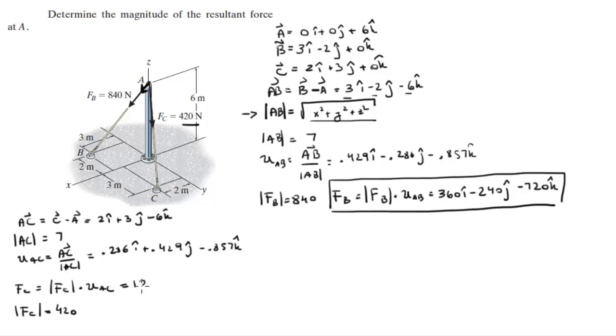So FC comes out to be 120 I plus 180 J minus 360 K.